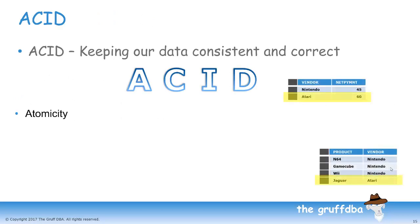The A is for Atomicity. In our example, we have a vendor table and a product table. If, as part of our transaction, we delete Atari from the vendor table and Jaguar from the product table, Atomicity states that the database must complete both parts of the transaction or none of the parts. We can't have it partially succeed and partially fail. The transaction must be atomic.